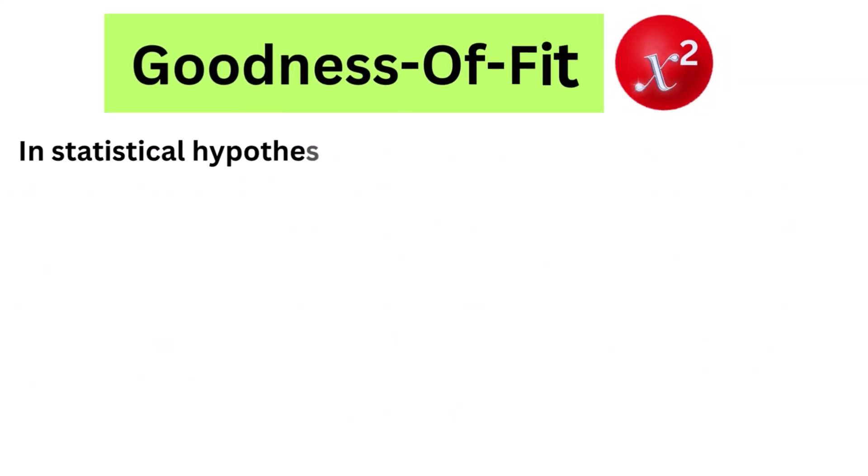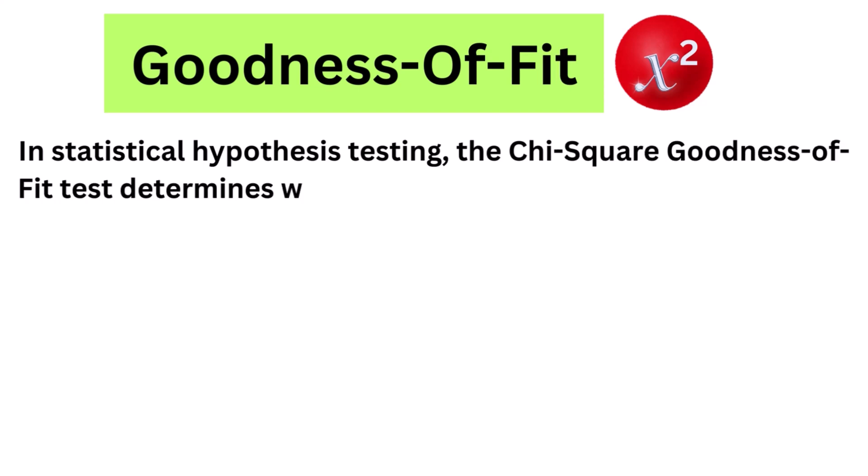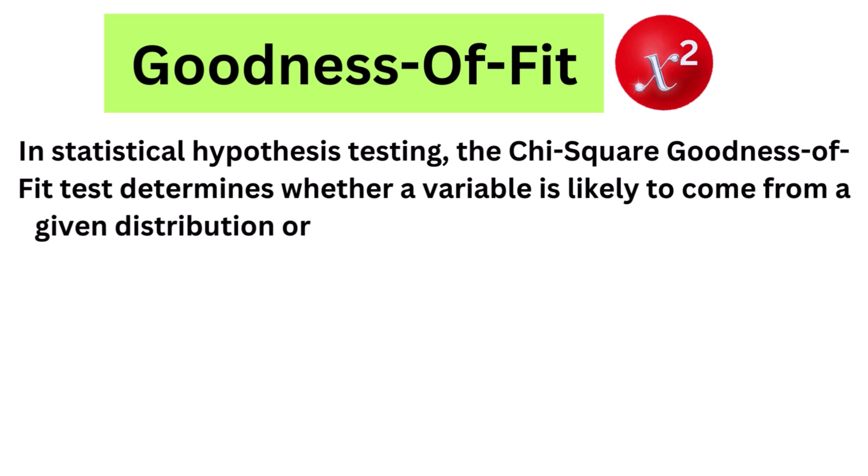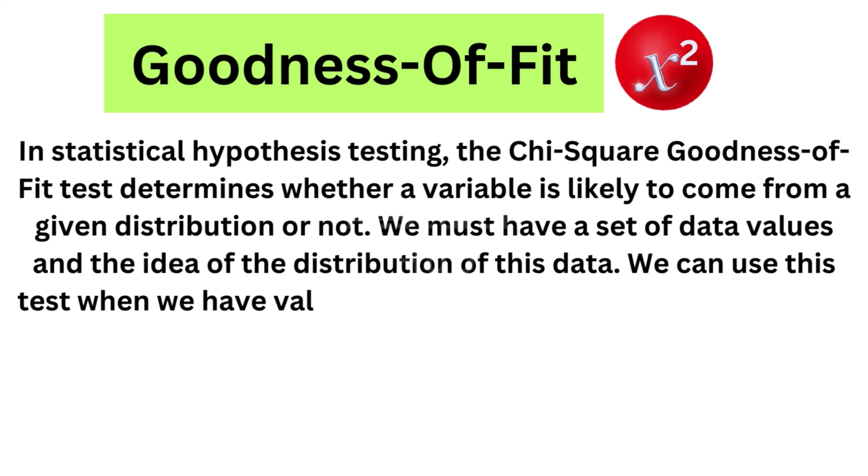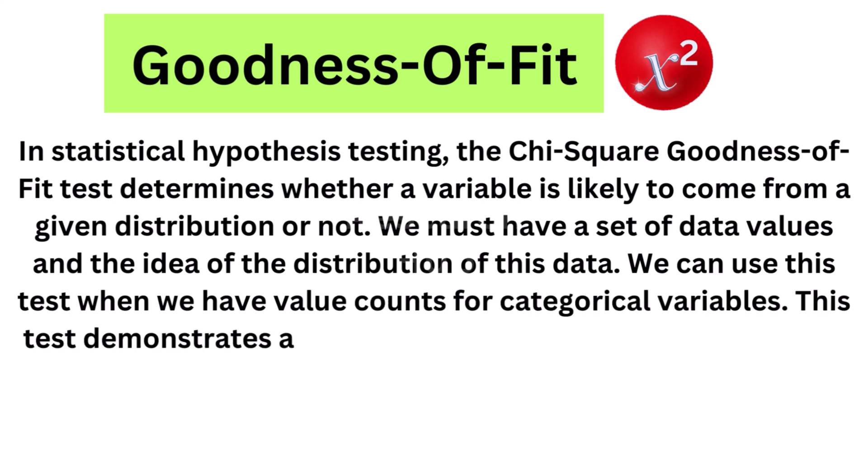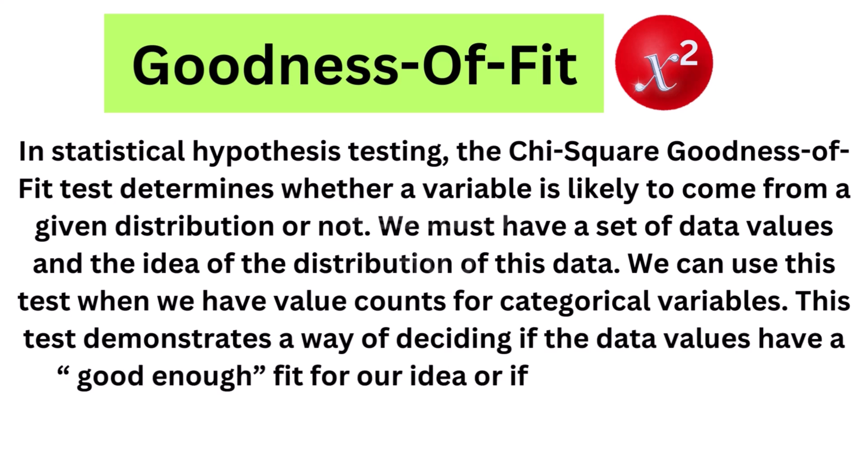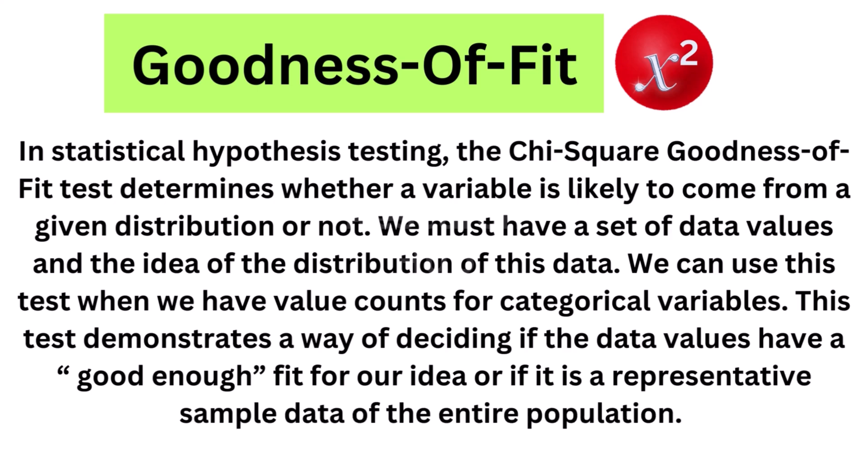Goodness of fit. In statistical hypothesis testing, the chi-squared goodness of fit test determines whether a variable is likely to come from a given distribution or not. We must have a set of data values and the idea of the distribution of this data. We can use this test when we have value counts for categorical variables. This test demonstrates a way of deciding if the data values have a good enough fit for our idea or if it is a representative sample data of the entire population.